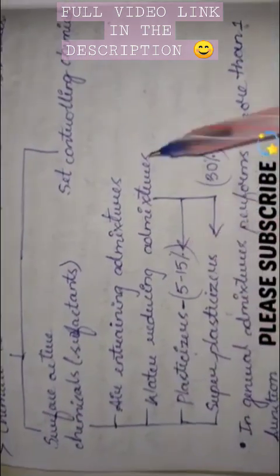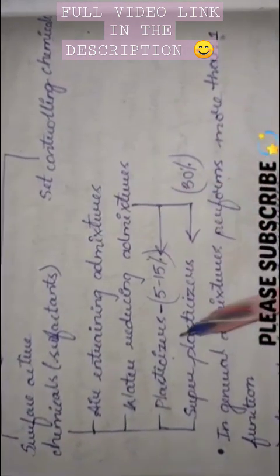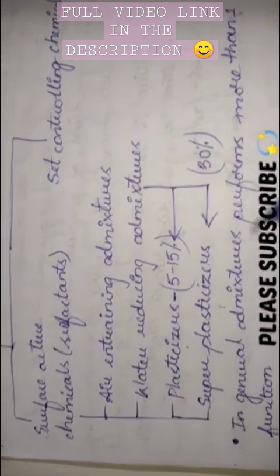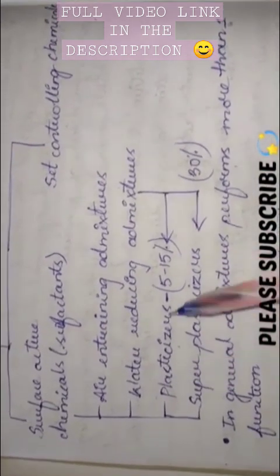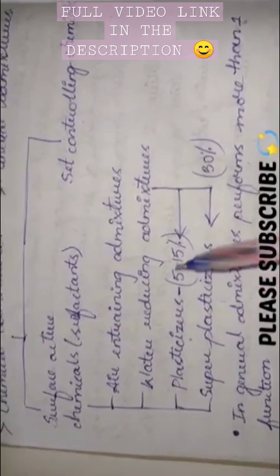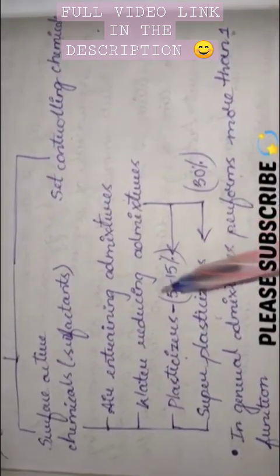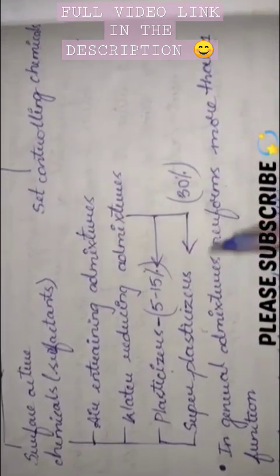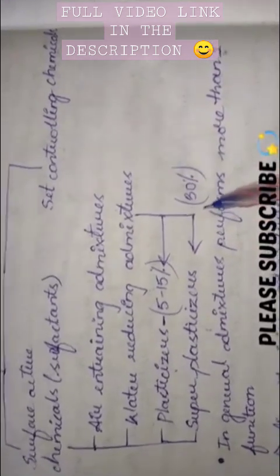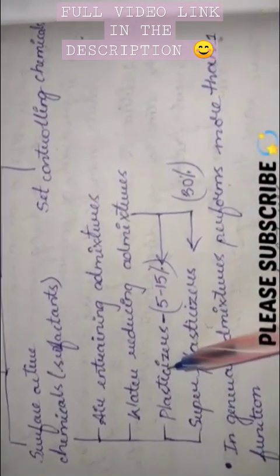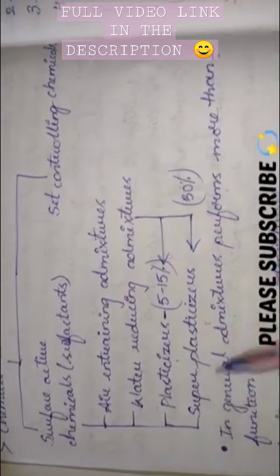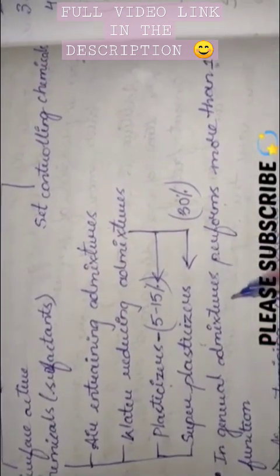In chemicals, we have water reducing admixtures. It is again sub-classified as plasticizers and super plasticizers. So plasticizers will reduce the water content by 5 to 15 percent, whereas super plasticizers reduce the water content by 30 percent. That is why we call plasticizers water reducing admixtures and super plasticizers high range water reducing admixtures.